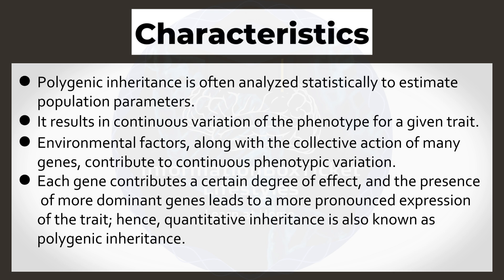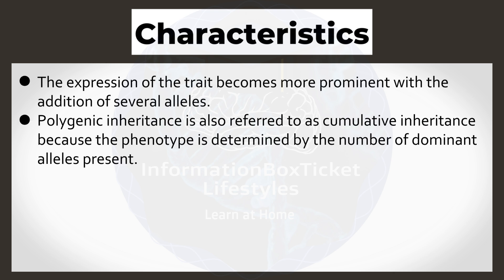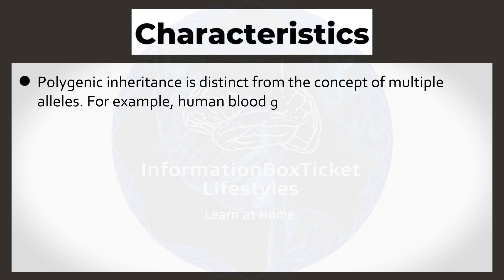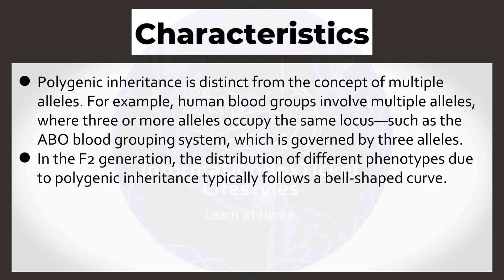Hence, quantitative inheritance is also known as polygenic inheritance. The expression of the trait becomes more prominent with the addition of several alleles. Polygenic inheritance is also referred to as cumulative inheritance, because the phenotype is determined by the number of dominant alleles present. Monogenic inheritance follows Mendelian patterns and can be predicted using phenotypic ratios, but polygenic inheritance does not follow Mendelian ratios. Polygenic inheritance is distinct from the concept of multiple alleles. For example, human blood groups involve multiple alleles, where three or more alleles occupy the same locus, such as the ABO blood grouping system, which is governed by three alleles. In the F2 generation, the distribution of different phenotypes due to polygenic inheritance typically follows a bell-shaped curve.